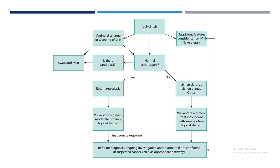The flowchart for managing vulval itch: whenever a patient comes with vulval itch, do external vulval examination and assess three things — presence of vaginal discharge or any discharge from lesions, whether the normal architecture of the vulva is preserved or there are skin changes, and whether there are any suspicious features like intraepithelial neoplasia or cancer. If there is discharge or weeping, suspect infection and take swabs. If there is a suspicious lesion of cancer or intraepithelial neoplasia, take biopsy and refer to a specialized vulval clinic or cancer center.